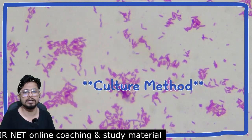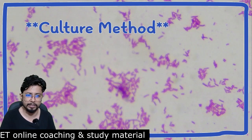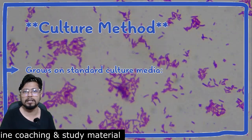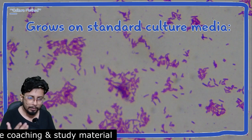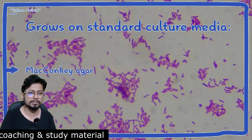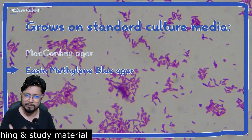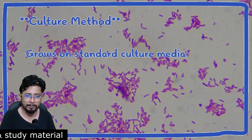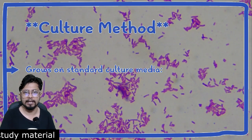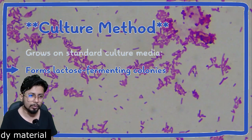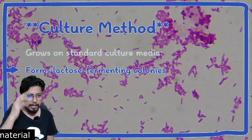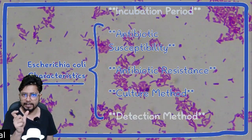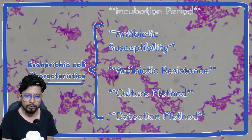What are the culture methods available to culture E. coli? It can grow on standard culture media. A key characteristic of E. coli is that it forms lactose-fermenting colonies.